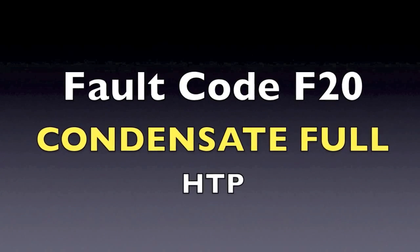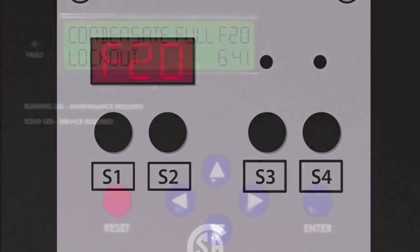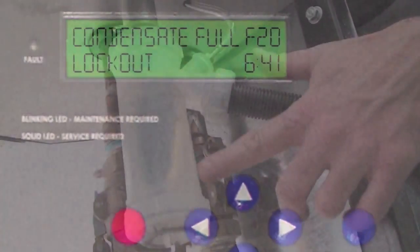If you are getting an F20 code in the display, this indicates that the condensate switch is opened and the condensate is not draining properly, which could cause potential damage to the heater.